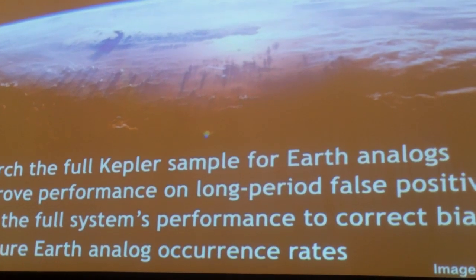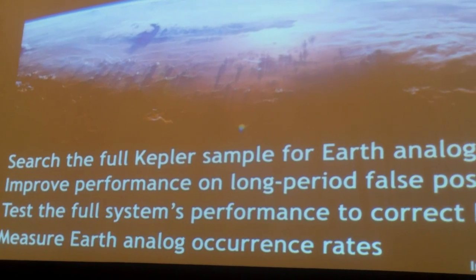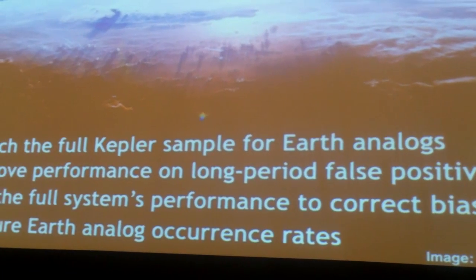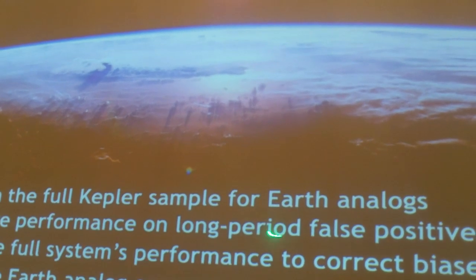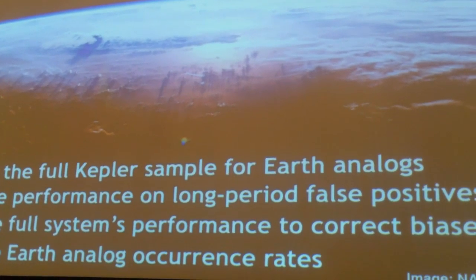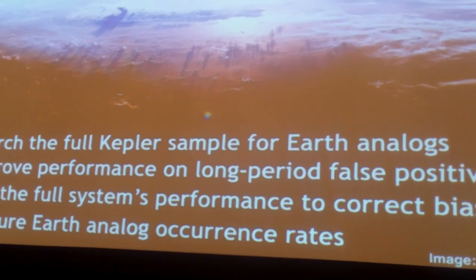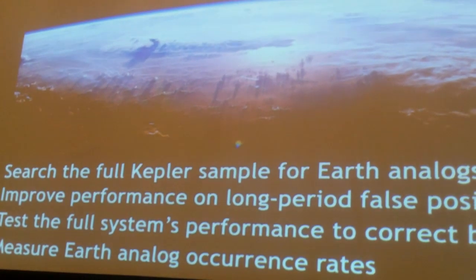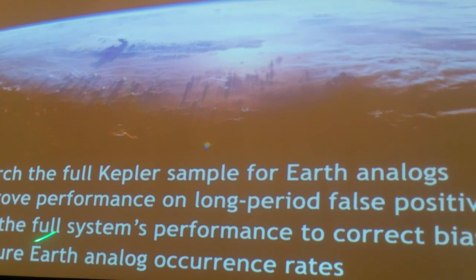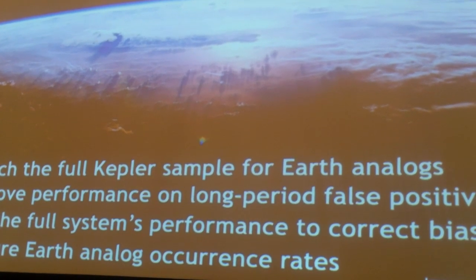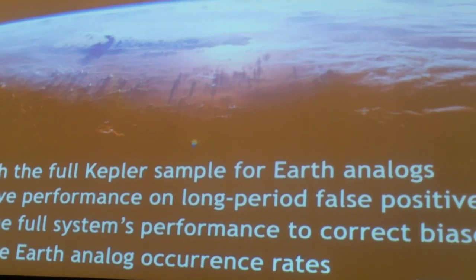We've been using this technique in a proof-of-concept way, but what we really want to do is push down to the Earth parameter space and search the full Kepler sample rather than the smaller sets we've searched so far. One thing we need to do is improve the model's performance on long-period false positives, which are particularly challenging — partly because we don't have many in our training set, and partly because long-period false positives can mimic planet signals very closely. If we can evaluate the full system's performance and understand those biases, we can potentially use the system to measure the planet occurrence rate.